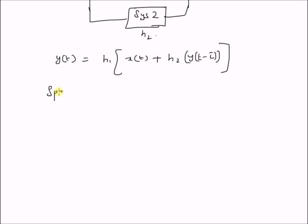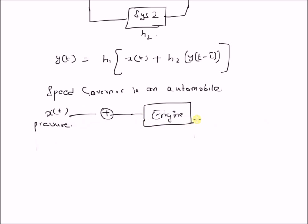A good example is a speed control or speed governor in an automobile. We have the input x of t, which is the pressure, that is the foot pressure from the driver. And then we have the engine, which converts the pressure on the pedal to the motion of the vehicle v of t, which is quantified by velocity v of t.